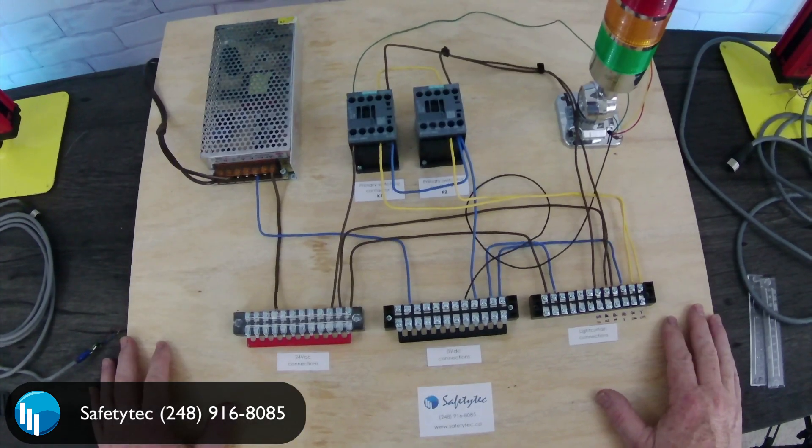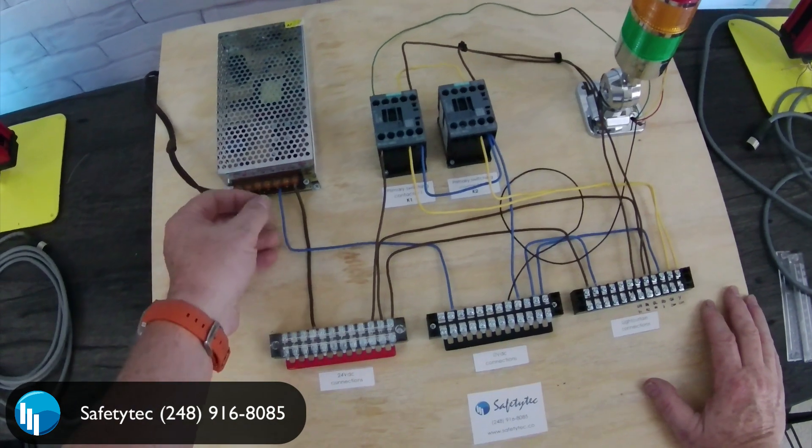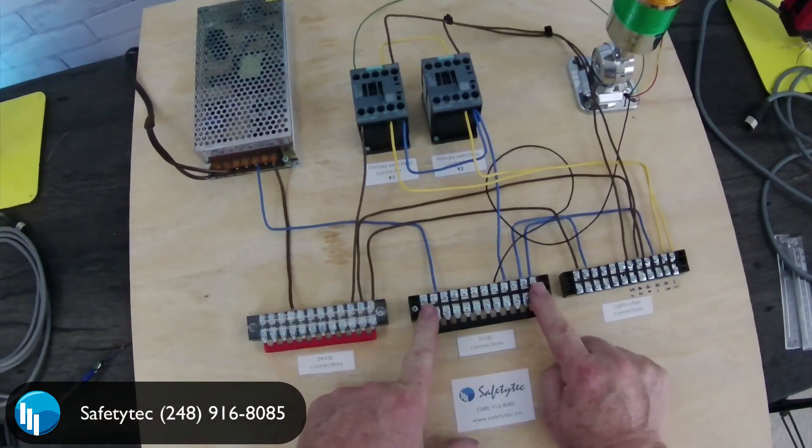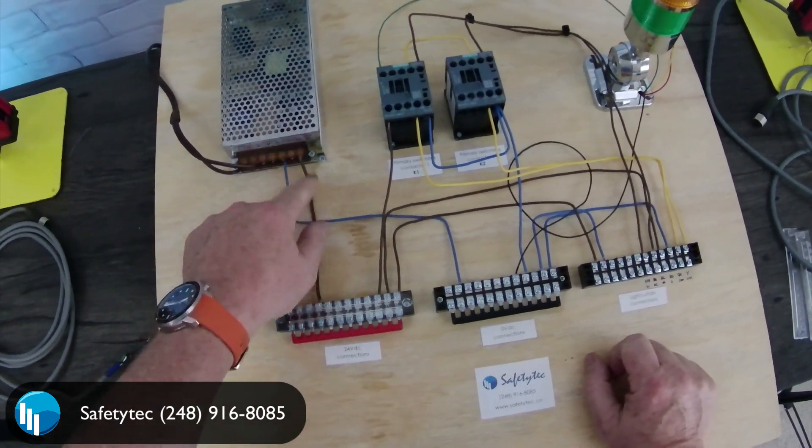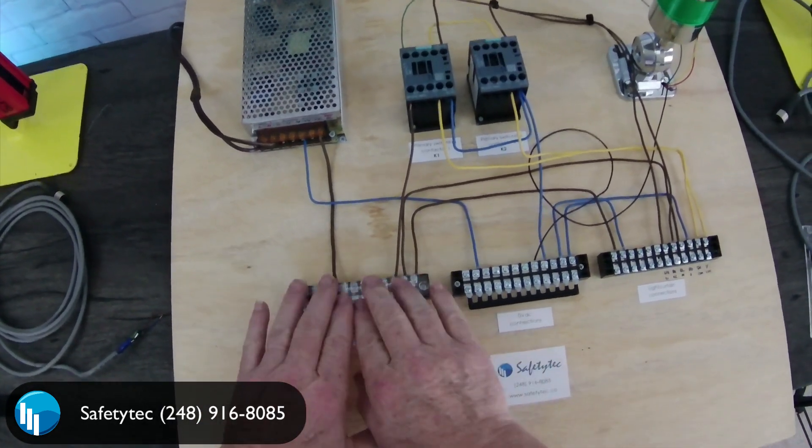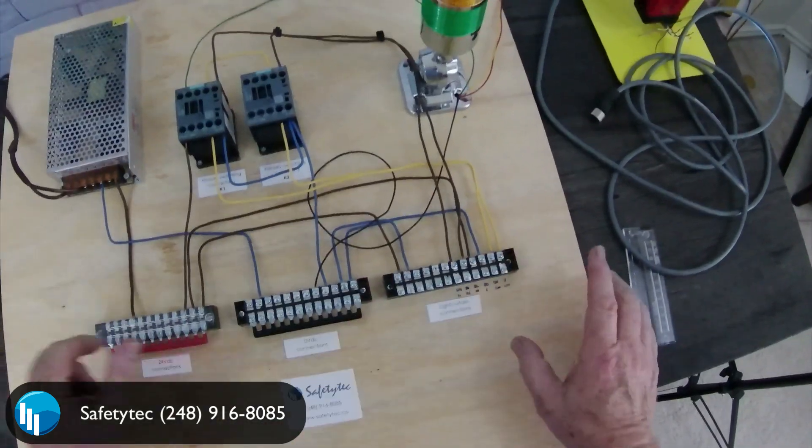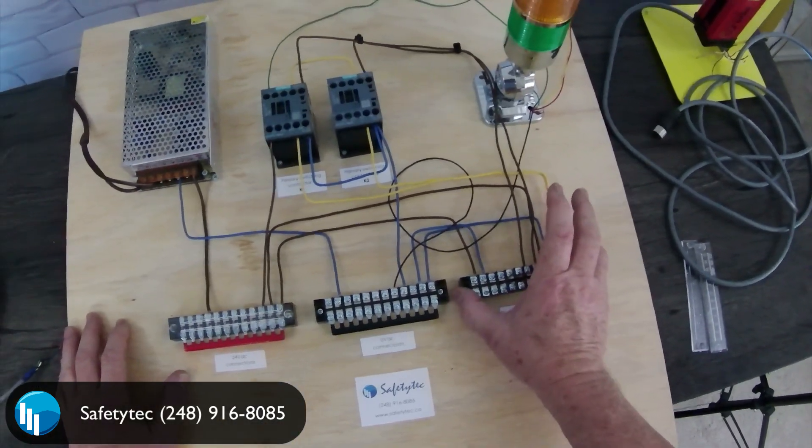So we've created a simulated machine. We have a power supply unit which brings the zero volts to this terminal. This is our zero volts terminal, and we have a positive wire bringing this terminal block to 24 volts. This terminal block is all to do with the connections for the light curtain, which we will discuss as we go.